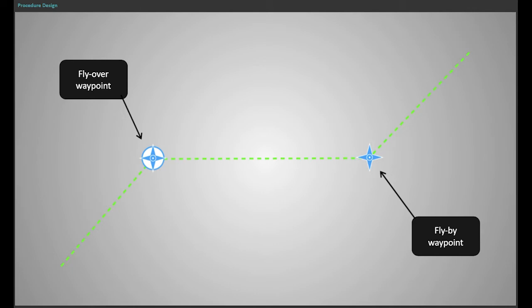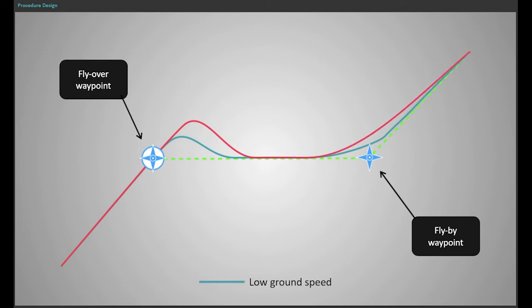Waypoints used in RNAV are flyover waypoints and flyby waypoints. The transitions between legs are not geographic and repeatable, for example, due to the difference of ground speed.